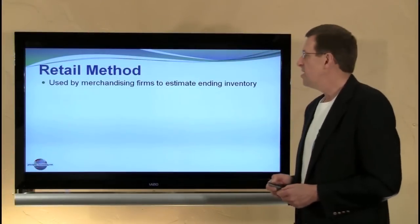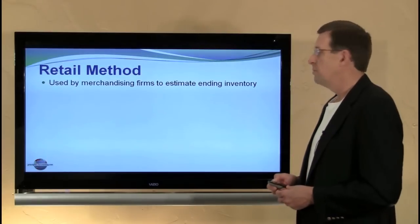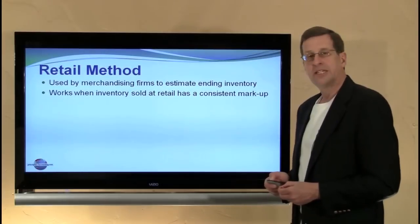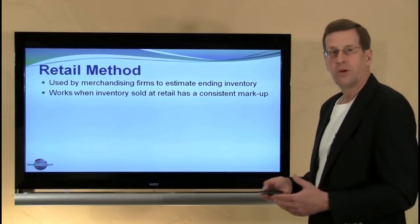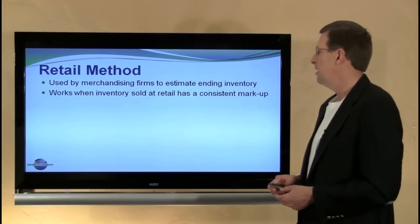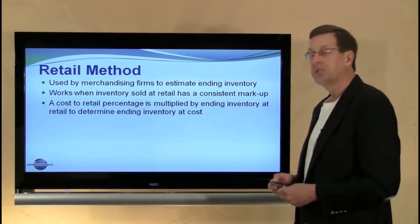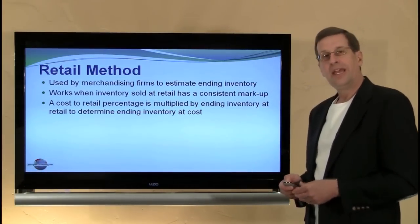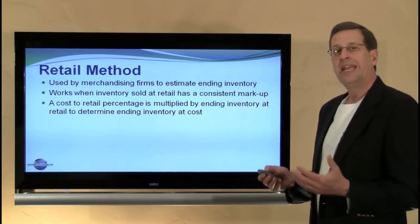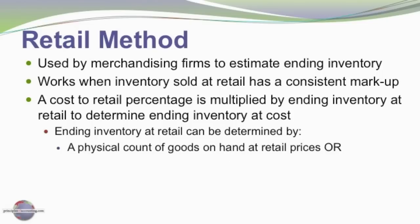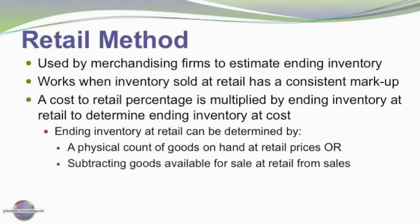Another method is the retail method. This is used by merchandising firms to estimate their ending inventory, and it works well when inventory is sold at a consistent markup — maybe everything in the store is marked up forty, fifty, or sixty percent. We determine the cost-to-retail percentage, which is multiplied by ending inventory at retail to determine ending inventory at cost. Ending inventory at retail can be determined by a physical count at retail prices, or by referencing actual sales information subtracted from goods available for sale at retail.